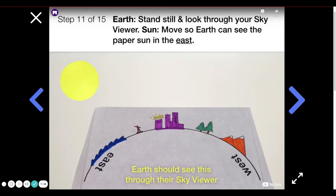Earth. Stand still and look through your sky viewer. Sun. Move so earth can see the paper sun in the east, over the ocean. When the sun is in the east, it's sunrise.